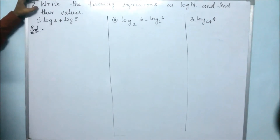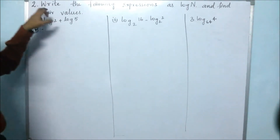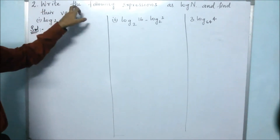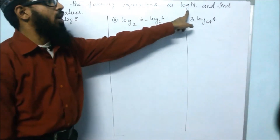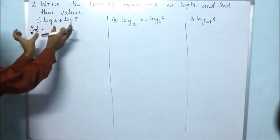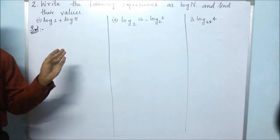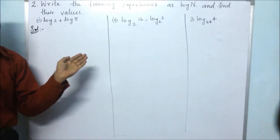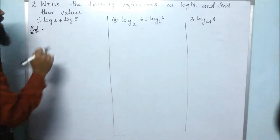This is the second problem. They said to write the following expressions as a single log. This is the expanded form, so we have to write it in short form as log n.